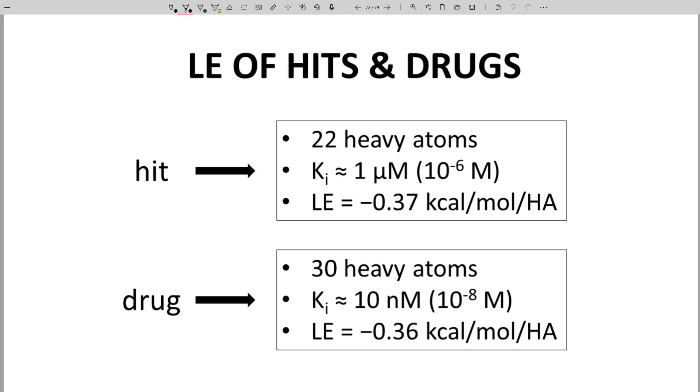What is a typical hit from a library screen? Hits and leads generally have a molecular weight of around 325 or so. That's a really rough estimate. Molecules with that molecular weight have about 22 heavy atoms. Hits have a potency close to 1 micromolar, that is a Kd or Ki of 10 to the minus 6 molar. Those numbers give a ligand efficiency for our representative hit of minus 0.37 kcals per mole per heavy atom.